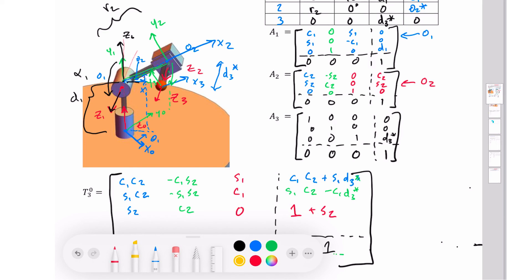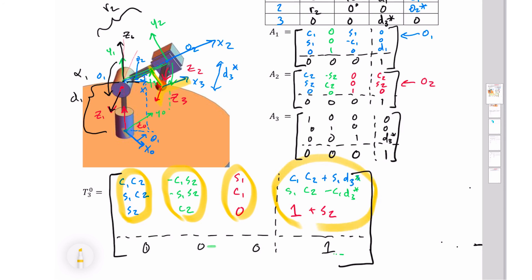So now we have our forward kinematics. Remember, this column here tells us what direction is x3 with relationship to my base coordinate frame. This is what direction is my y3 with relationship to the base frame. This is where is my z3 with relationship to the base frame. And these components tell us what is this point in my x, my y, and my z in order to get there.